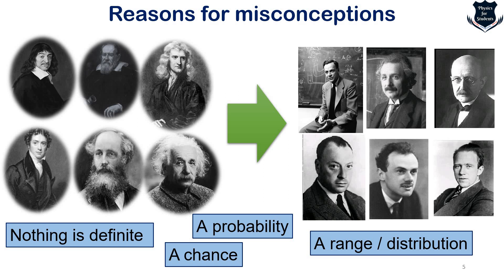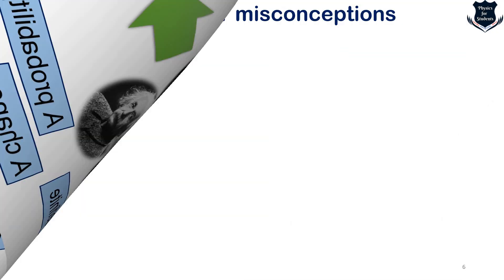Whenever the brain doesn't get anything deterministic or definite, the mind tries to perceive certain conceptions — maybe this, maybe that, maybe this is a chance, maybe that — but there is definite mathematics behind that, and that is the reason for misconceptions as soon as we move from classical determinism into the world of probability.